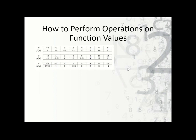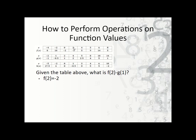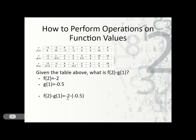How do we perform operations on function values? Given the table, what is f of 2 minus g of 1? We find f of 2, which is negative 2, and then subtract g of 1, which is negative one half. So f of 2 minus g of 1 is negative 2 minus negative 0.5, which is really plus positive 0.5, and we get negative 1.5 as our solution.